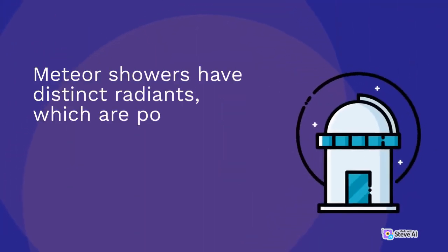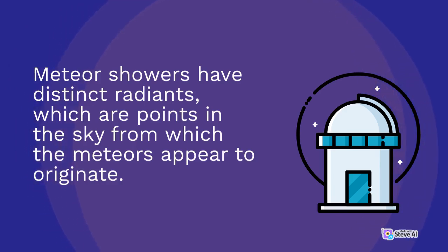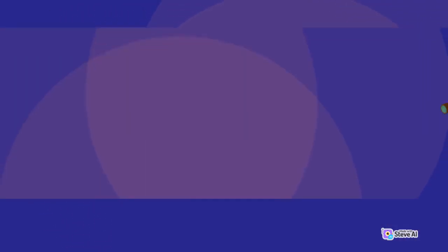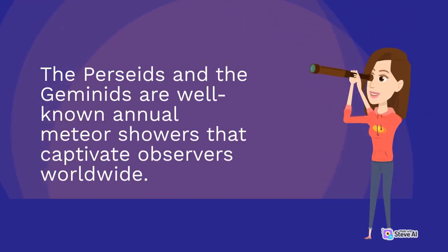Meteor showers have distinct radiants, which are points in the sky from which the meteors appear to originate. The Perseids and the Geminids are well-known annual meteor showers.